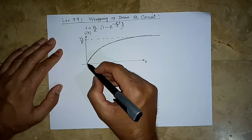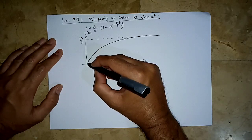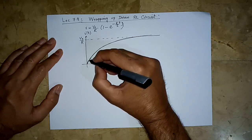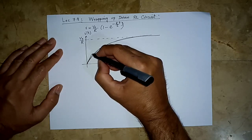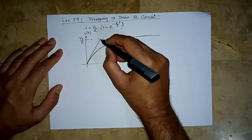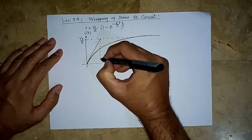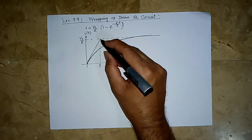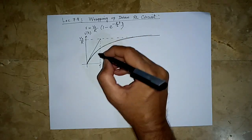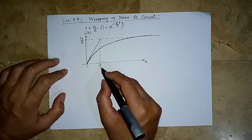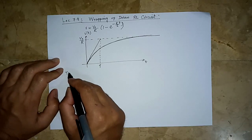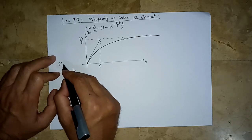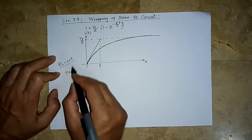If we draw a tangent — the slope with which it starts rising — if we draw a tangent at this point, then the time at which it will reach the saturation value is what is known as the time constant. For this RL circuit, that is equal to L over R.